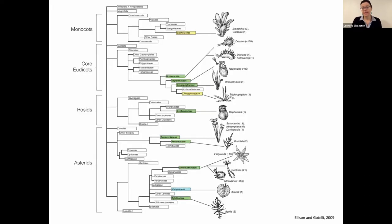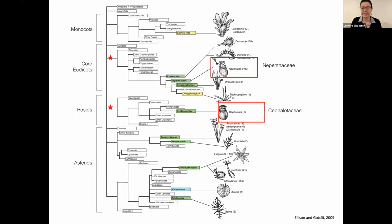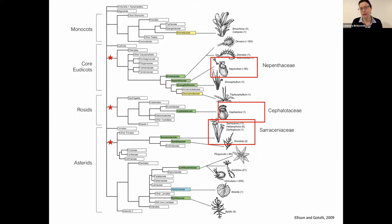This evolutionary tree of flowering plants maps the separate, independent evolutions of carnivory. The Nepenthaceae are found in Southeast Asia with many different species; the Cephalotaceae is found only in western Australia with a single species; and the Sarraceniaceae are found in the Americas with many species. These groups are in fundamentally different plant lineages and evolved completely independently, yet they have the same cup-shaped leaves, similar red and green coloration, and the same function of trapping and digesting insects.